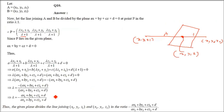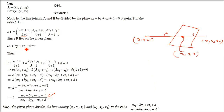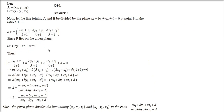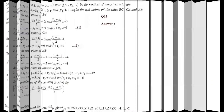This ratio is negative, so it is dividing externally. The method: assume a point (x, y, z) on the plane, find it using the section formula, then put it in the equation of the actual plane and find lambda.